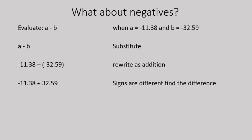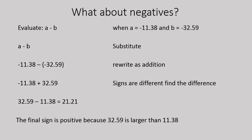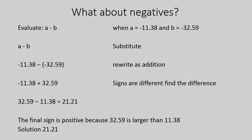Lots of negatives in there. Remember though that you can rewrite that as addition. So instead of saying minus negative 32.59, we can say plus 32.59 and look at it as an addition question where all the rules of addition apply. The signs are different, so you're going to find the difference: 32.59 minus 11.38 gives you 21.21. The final sign is positive because there are 32.59 positive numbers and only 11.38 negatives — the positive number is larger — so our final solution is positive 21.21.